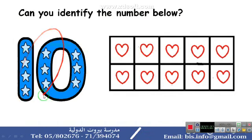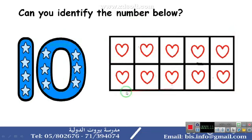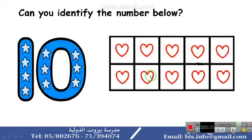What number is this? Very good — this is number 10. Now look at the 10-frame. We call it a 10-frame because it has 10 blocks. Let's count how many hearts are inside it: 1, 2, 3, 4, 5, 6, 7, 8, 9, 10. So we have 10 hearts.